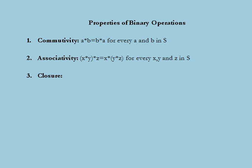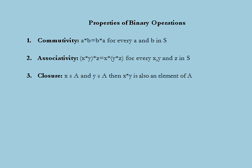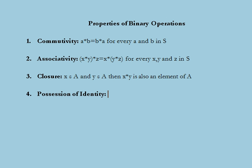Another property associated with binary operations is the closure property. A binary operation denoted by star is said to be closed on a set A if and only if whenever X belongs to A and Y belongs to A, then the binary operation on X and Y is also an element of A.